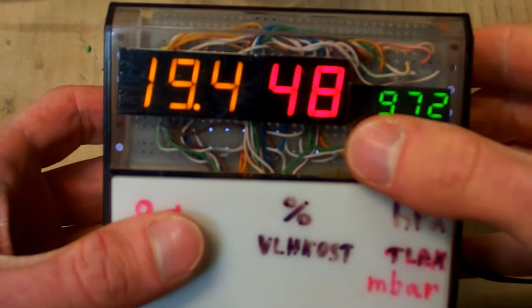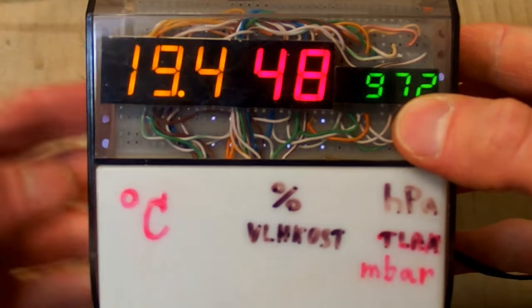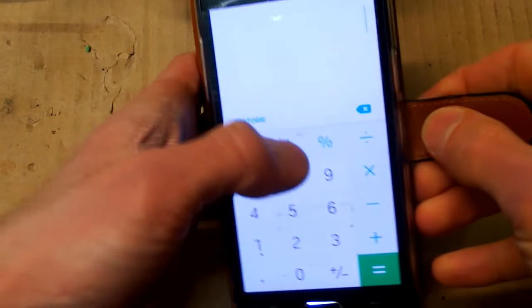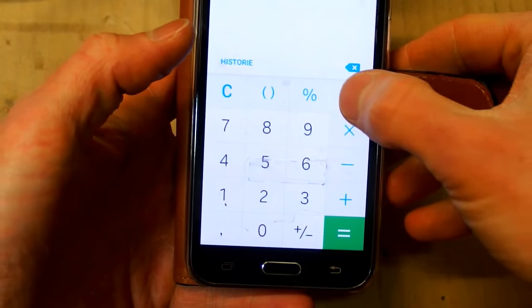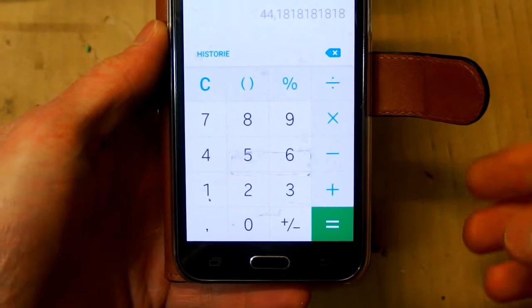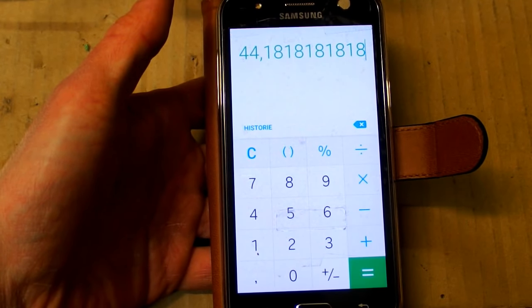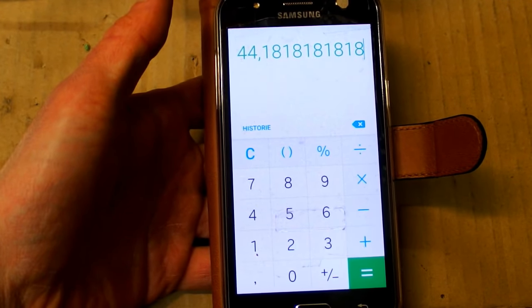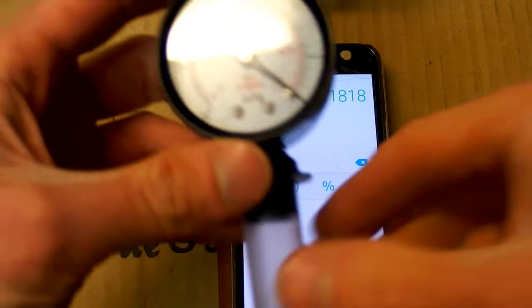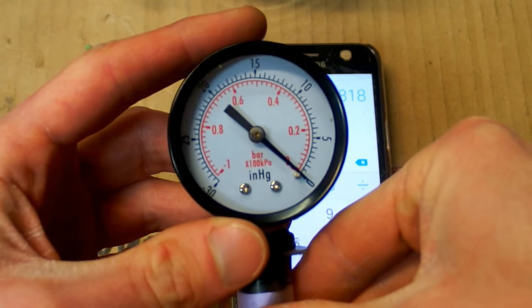Now the ambient pressure is about 972 millibars. And the pressure went down 22 times. So the pressure in the chamber should be about 44 millibars, which is very close to this one, which was showing about 40 millibars.